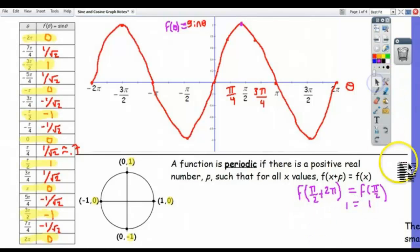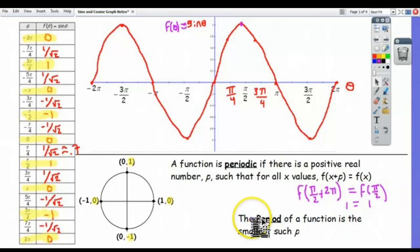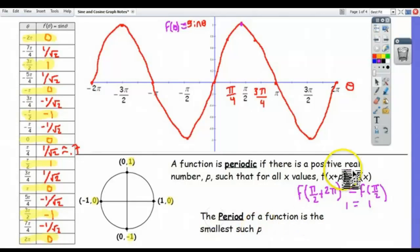The period of the function is just the smallest p value. I could also add 4π, because if I add 4π that means I go around from here once, twice. But I wouldn't say 4π is the period because 2π is the smallest value for which this is true. If I rotate around just 2π, I'll get back to where I started. So we say that 2π is the period of the function.